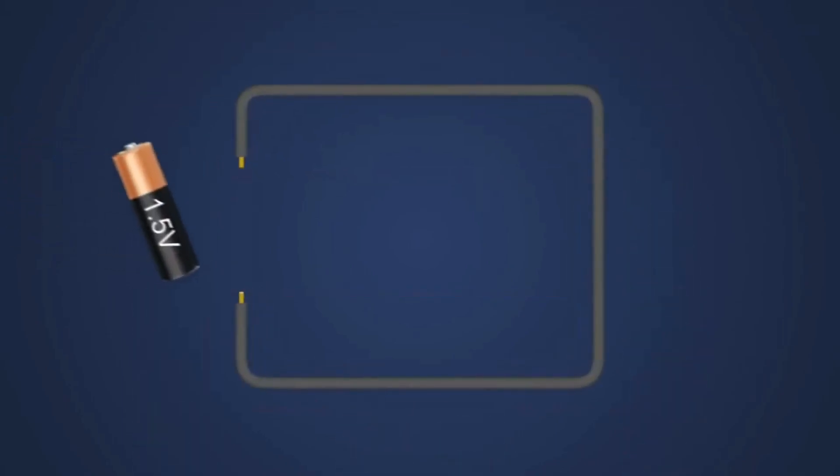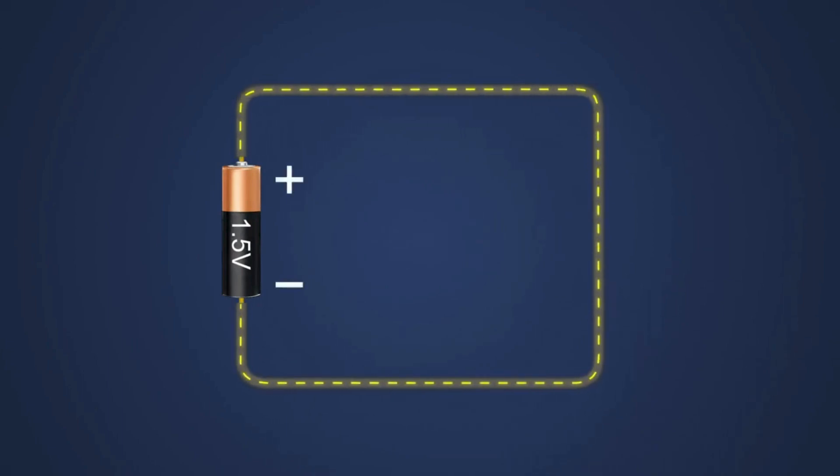If we take a conductive metal wire and complete the circuit with a battery, the electrons from the negatively charged side of the battery will be attracted to the positively charged end of the battery at a force equal to 1.5 volts in this example.